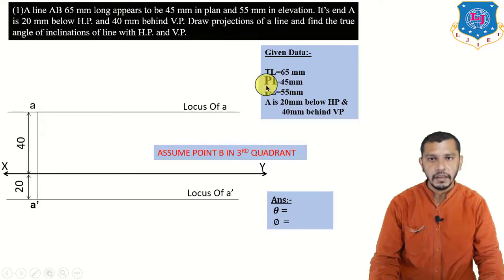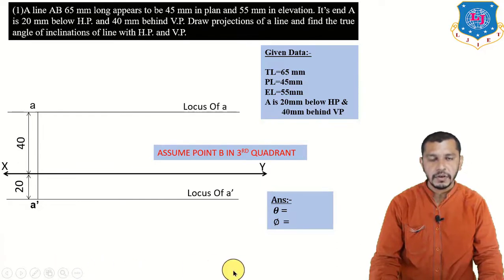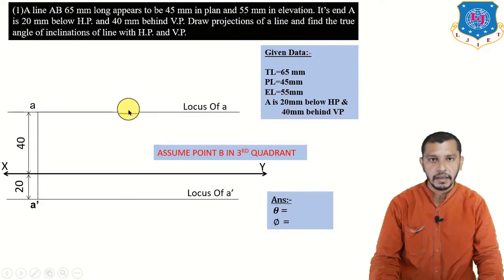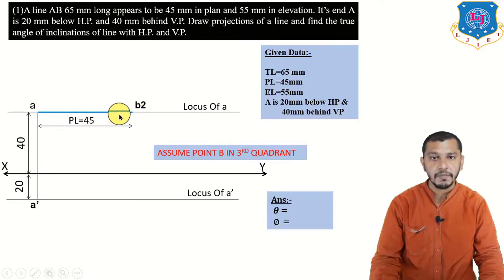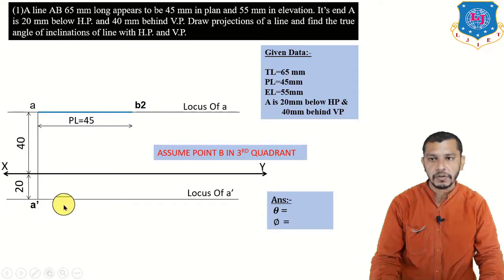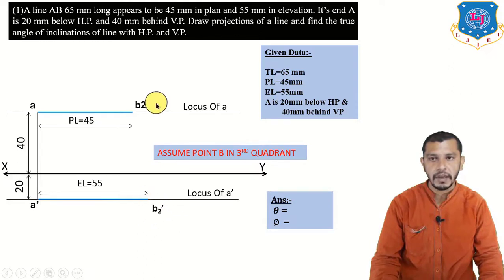Elevation length is 55 mm — we can draw elevation from A-dash, but alpha angle or the locus of B-dash is required, which is also not given. So instead, mark B2 on the locus of A: measure plan length 45 mm and mark B2 on the locus of A. Then measure elevation length 55 mm from A-dash to get B2-dash. Now we have B2 and B2-dash.